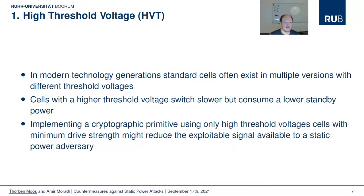The first countermeasure can barely be called a countermeasure — it is more of a design strategy that reduces the leakage. In modern CMOS libraries, standard cells typically exist in multiple versions with different threshold voltages to fully take advantage of the latency versus leakage tradeoff. Cells with a higher threshold voltage have a larger latency but consume a lower standby power. Therefore, implementing cryptographic algorithms using only such high-threshold-voltage cells should reduce the exploitable signal available to static power adversaries.